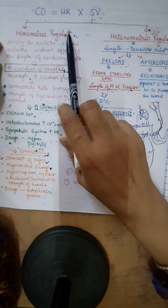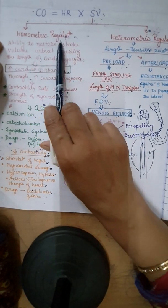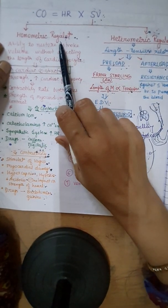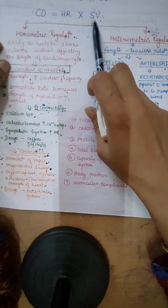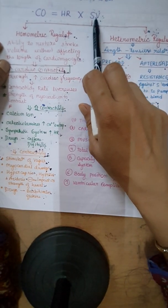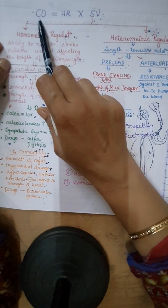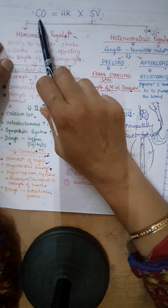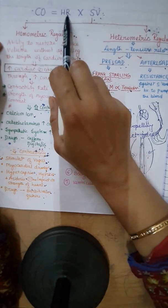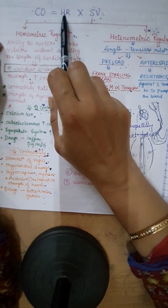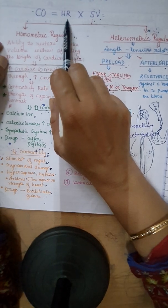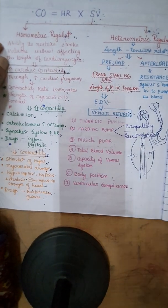We have discussed both homometric regulation and heterometric regulation as the factors that affect stroke volume. Any variation in stroke volume will also affect cardiac output. In the upcoming lecture, I will discuss heart rate — the next factor which can affect cardiac output.